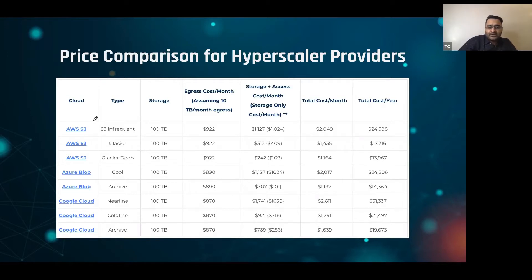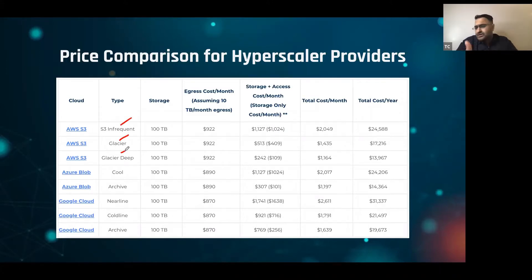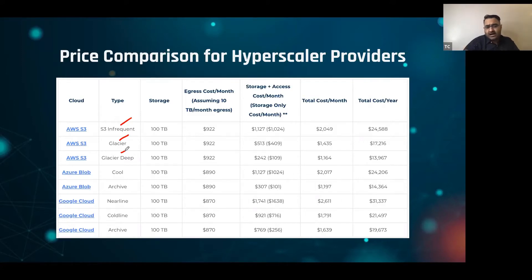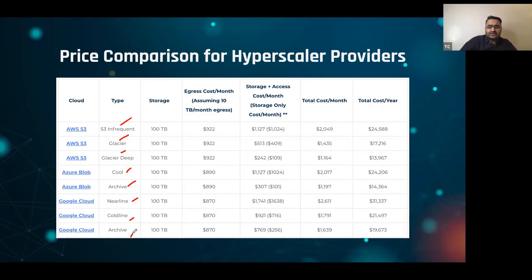We took AWS and three tiers: S3 Infrequent, Glacier, and Glacier Deep. The reason we took these three is because we asked what are the more cost-effective ways to store your data with one of these providers. The same thing for Azure — Cool and Archive — and the same thing for Google Cloud.